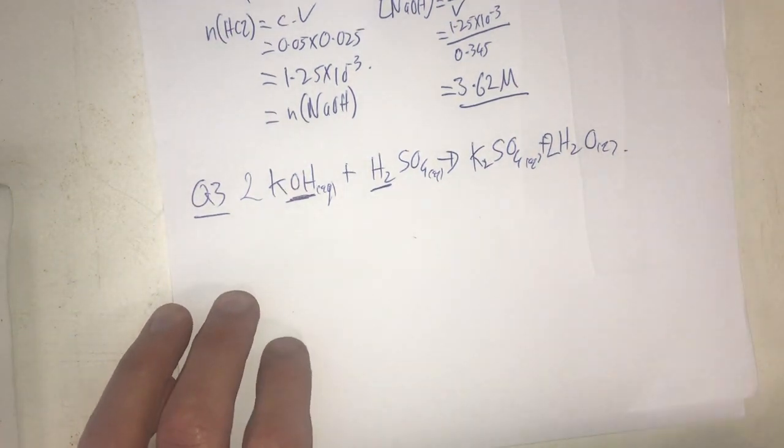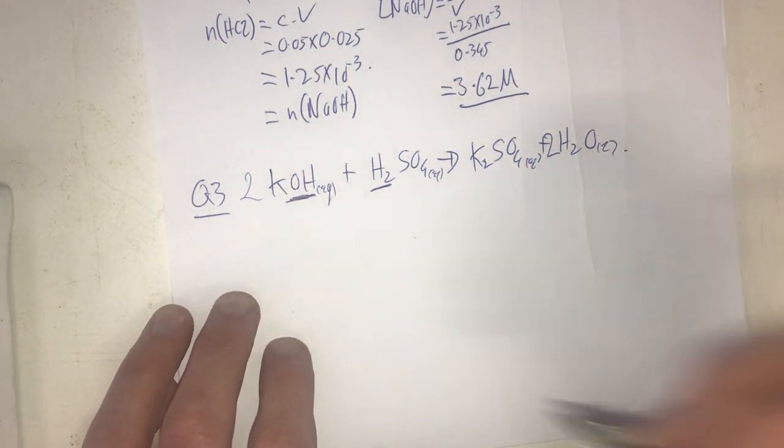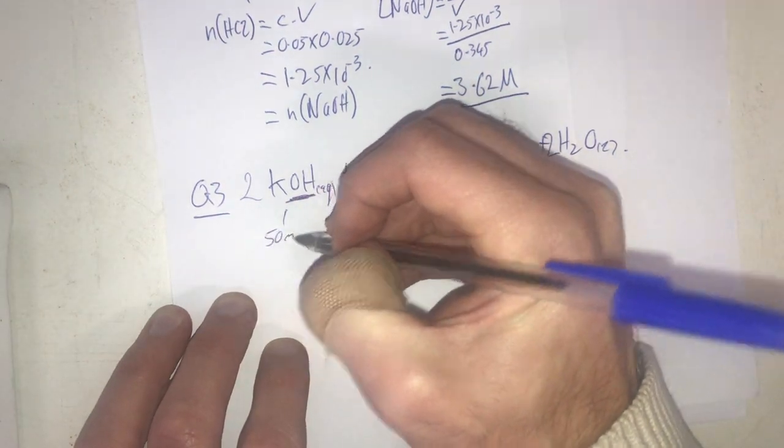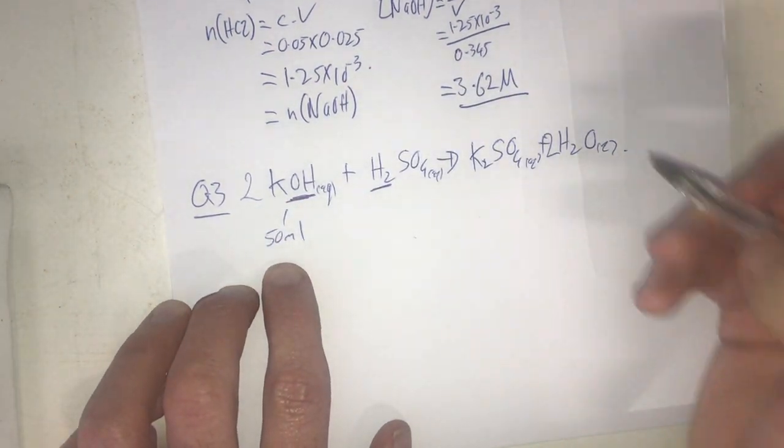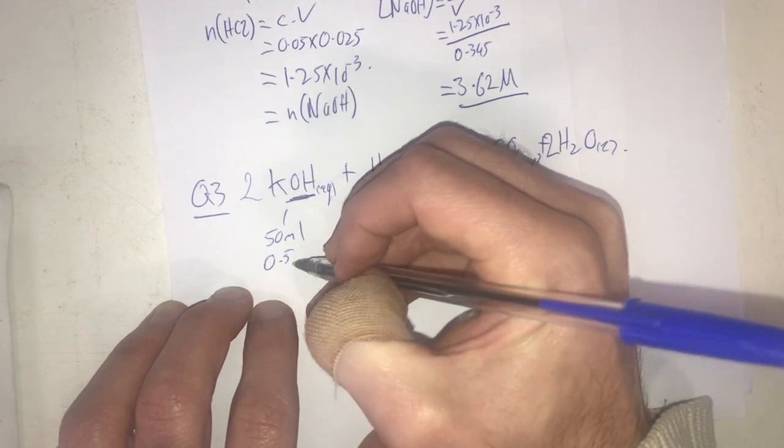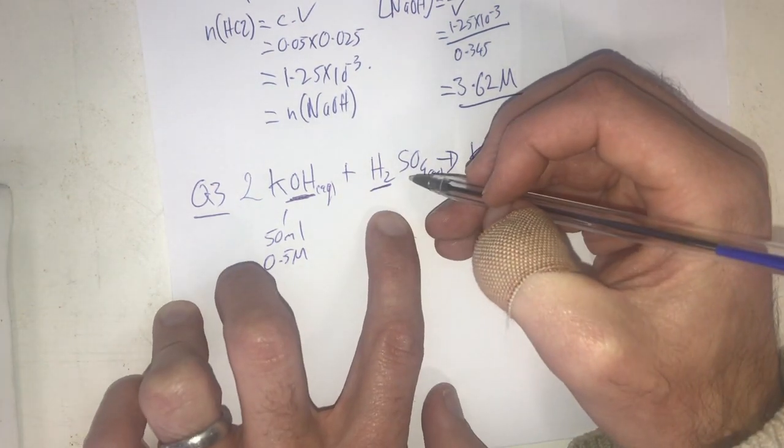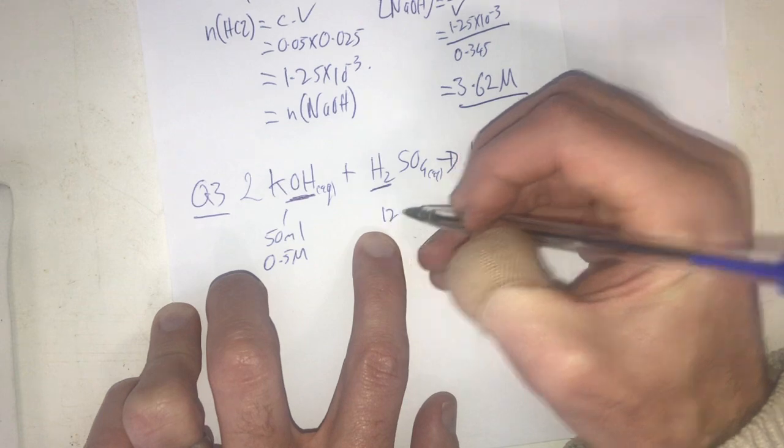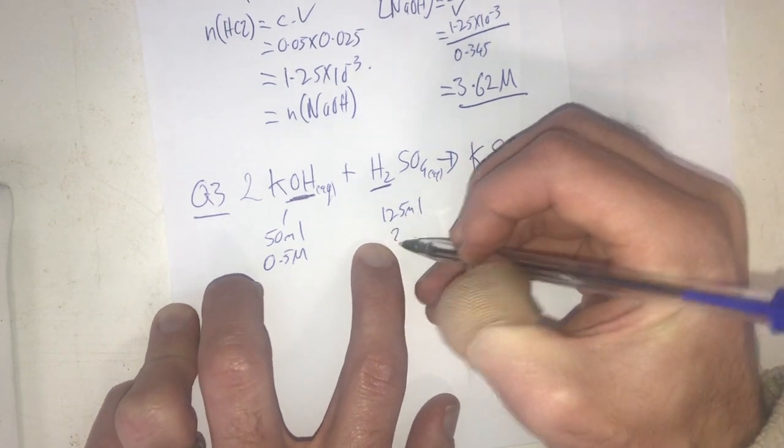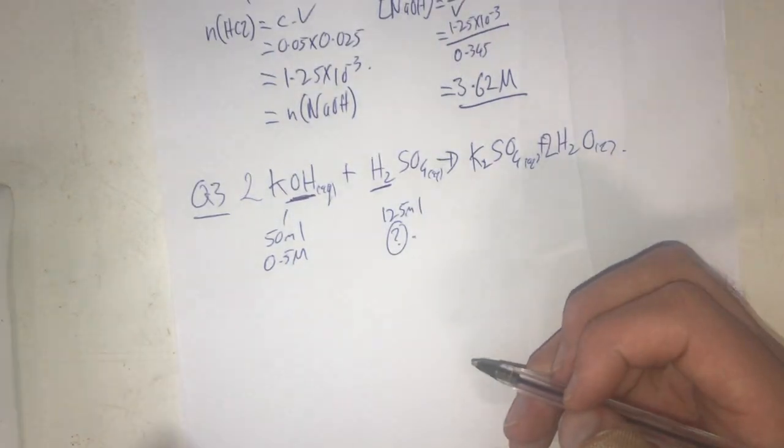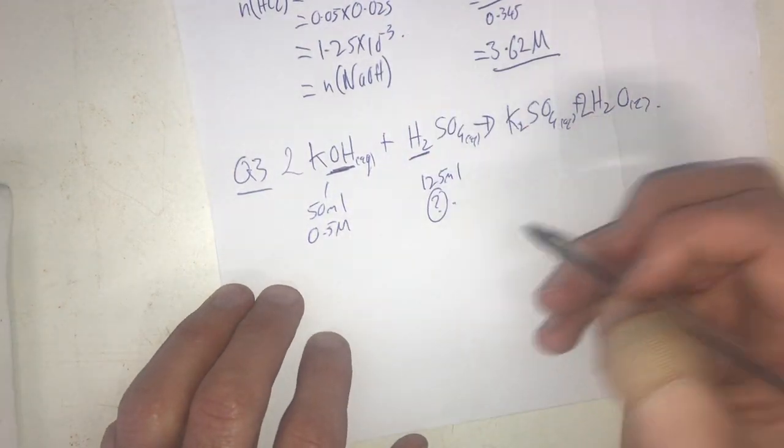Anyway let's move on to what's in the question. What have I got? I've got 50 ml of potassium hydroxide, and that's going to be 0.5 molar, and our sulfuric acid here is going to be 125 ml. I'm not going to know my concentration, and that's what we need to find out.